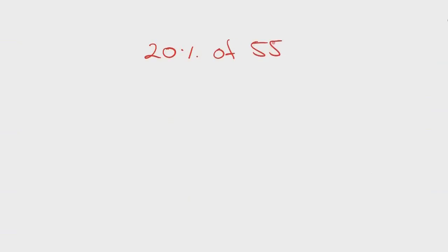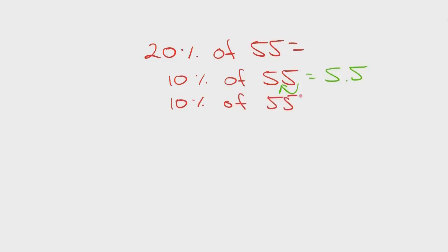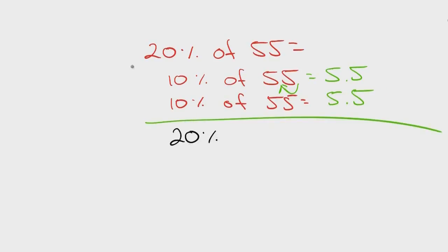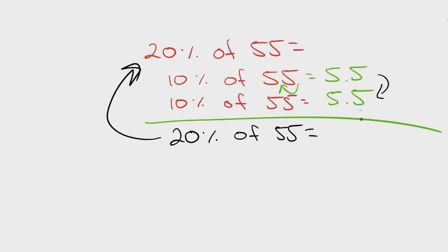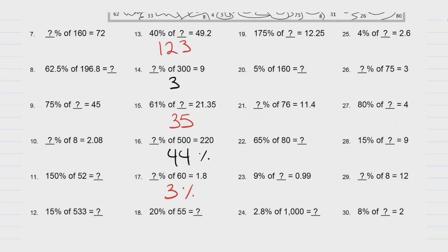Problem 18: 20% of 55. This is an easy problem — change 20% to 10% + 10% of 55. To find 10% of 55, move the decimal one place: that equals 5.5. Do this twice. 10% + 10% is 20%, so add 5.5 plus 5.5. 5 plus 5 is 10 — bring the decimal down, carry the 1. 5 plus 5 plus 1 is 11. So the answer is 11. The answer for number 18 is 11.